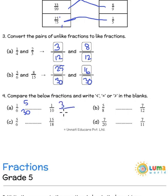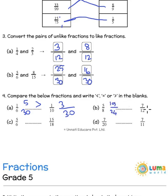So 5 by 30 is greater than 3 by 30. Next is 5 by 8 and 7 by 12. The LCM is 24 between 8 and 12. Here 8 is multiplied by 3, so multiply the numerator also by 3, which gives 15 by 24. And 12 twos are 24, so multiply by 2 and you get 14. So 15 by 24 is greater than 14 by 24.